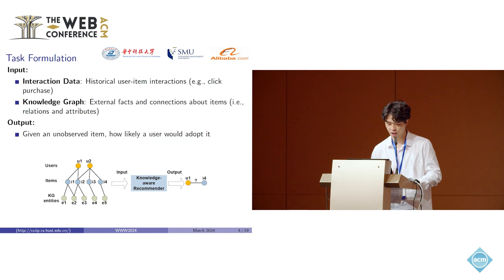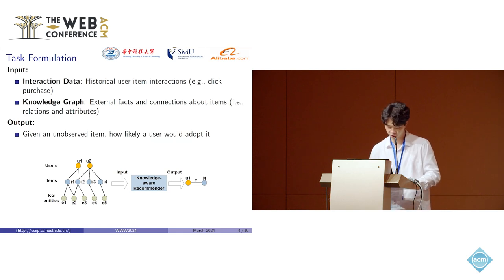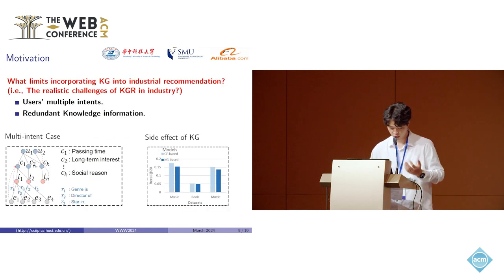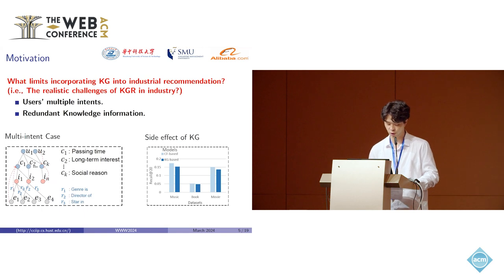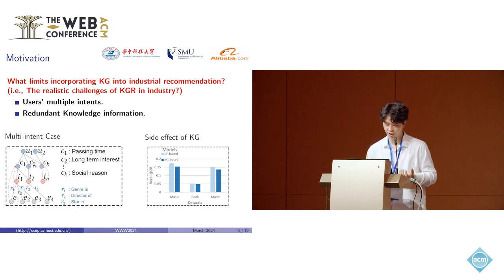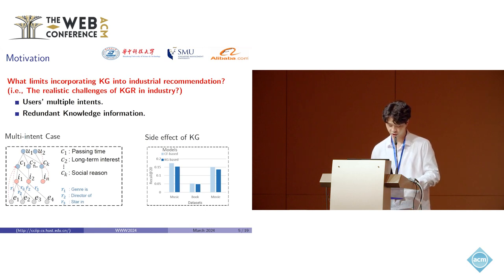Our goal is to learn a function to output the possibility of a user adopting a certain item. Then we consider Knowledge Enhanced Recommendation scenarios in industry. But we find one disappointing fact is that simply incorporating knowledge to supply item attributes would decrease the recommendation performance, just like the red figure. By analyzing purchasing cases in Taobao, we find that users' multiple intents are largely ignored by existing Knowledge Enhanced Recommendation models. Further, intent-irrelevant knowledge is not removed, which becomes noise in our model.